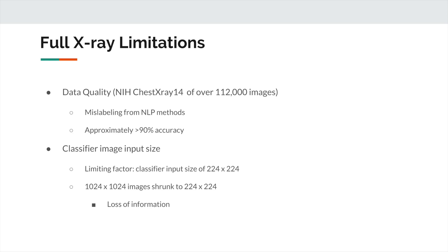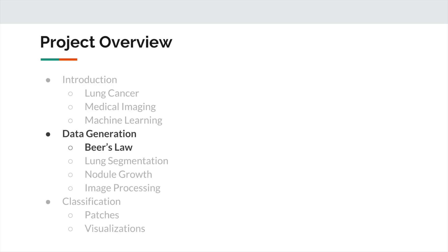Despite the promising results shown by previous work, several factors limit the accuracy of these learned models. First, the ChestX-ray 14 dataset provided by NIH was mined using a natural language processing model, which has its own error rate, although label accuracy is estimated at over 90%. Second, the trained classifier accepted an input size of 224x224 pixels, a standard in the machine learning community to fit common GPUs, which is much lower resolution than the original 1024x1024 pixel images in the dataset. This reduction in dimensionality is accompanied by a significant loss of information, which could be especially relevant in the detection of faint features. Our new approach addresses these issues by generating synthetic data to classify patches, which are chunks of the original image.